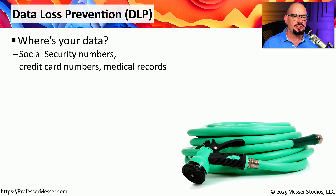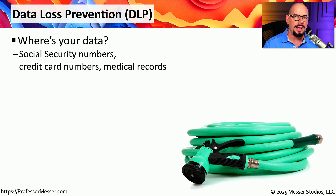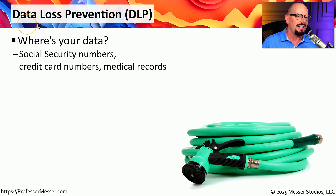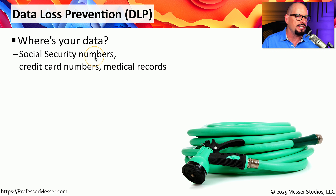We transfer sensitive information across our networks all the time, but it may be important to know where that sensitive information is going. You may want to set policies that prevent sensitive info from getting outside of your organization. One way to do that is through the use of Data Loss Prevention, or DLP. This allows an administrator to manage sensitive information such as social security numbers, credit card numbers, medical records, and any other type of personal data.